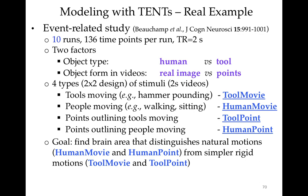A more realistic example comes from a paper by Mike Beauchamp, which had 10 imaging runs, 136 time points per run, and TR of 2 seconds. There were two factors and four kinds of stimuli: human images versus tool images, and real video versus point-light outline done with motion capture — a two-by-two design. The stimuli included images of tools moving (like a hammer pounding) or people moving, and corresponding point-light outlines. The goal was to find brain areas distinguishing natural human motion from simple rigid tool motion.